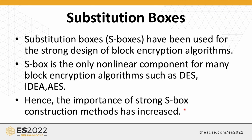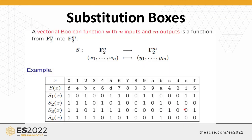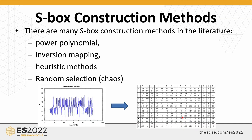Substitution boxes play an important role in the strong design of block encryption algorithms, because the S-box is the only non-linear component in many block ciphers, such as DES (Data Encryption Standard), IDEA, and AES (Advanced Encryption Standard). In fact, an S-box is a function or transformation similar to the Caesar encryption algorithm, where every symbol is transformed using a lookup table that converts input data to output data.